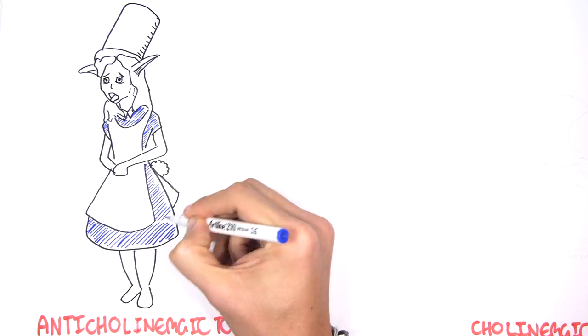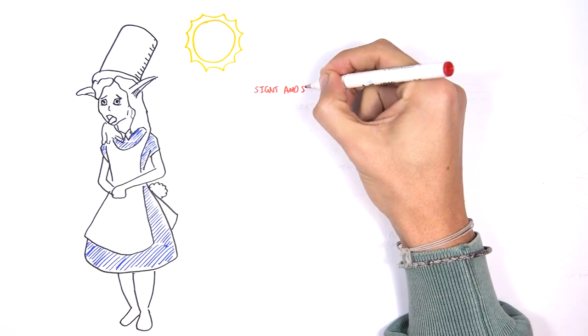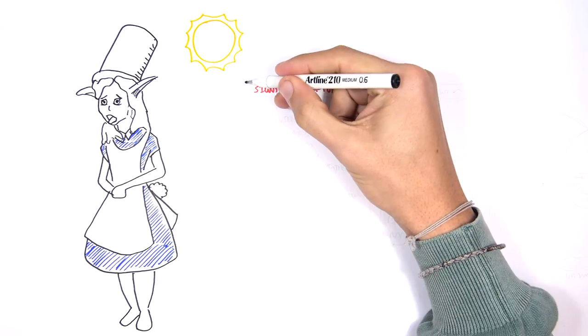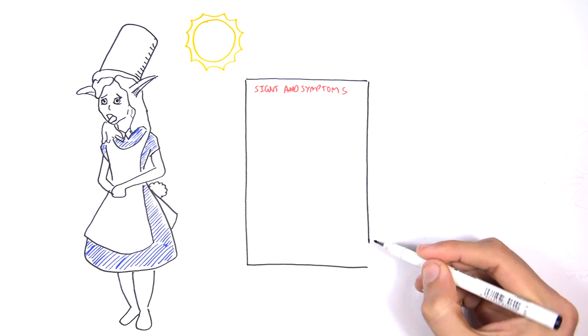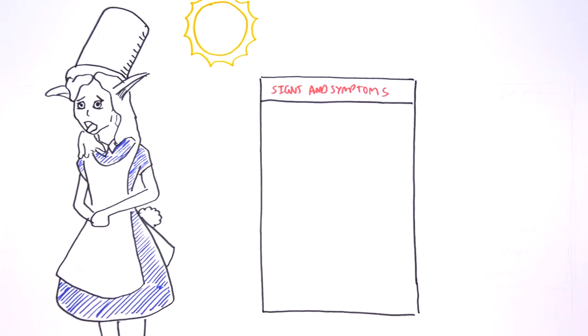And Alice is out at a sunny place. Now this can help you remember the signs and symptoms of anticholinergic toxicity. And there's sort of a rhyme that helps you remember.